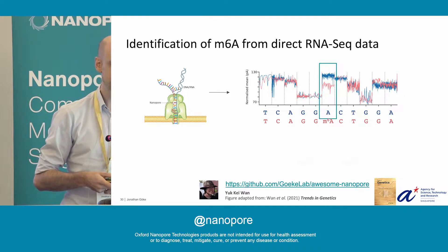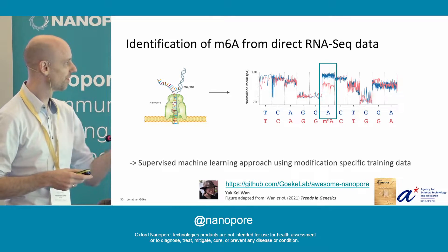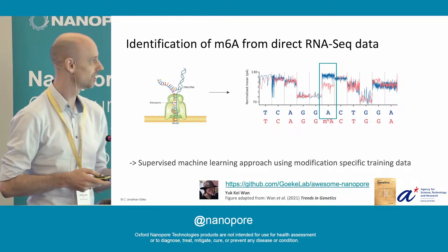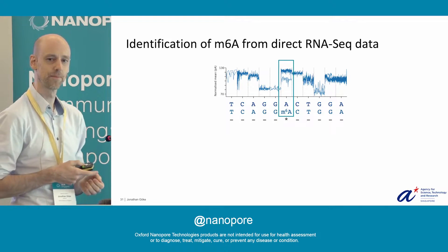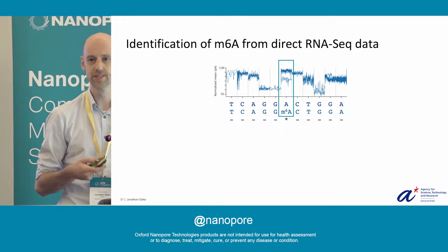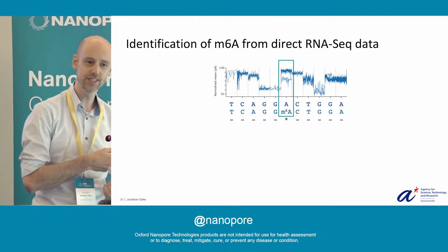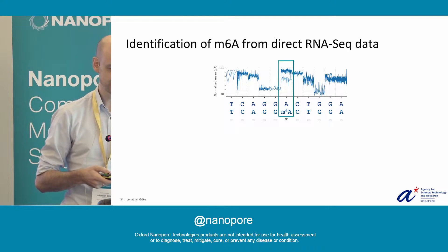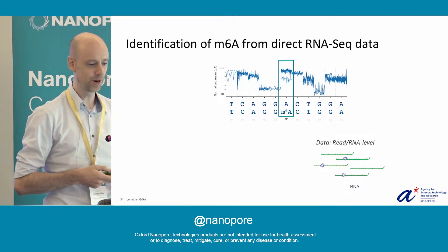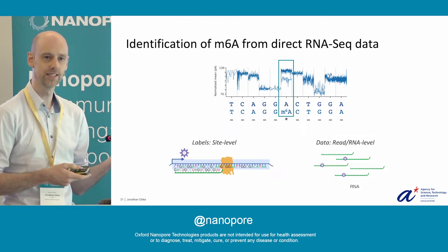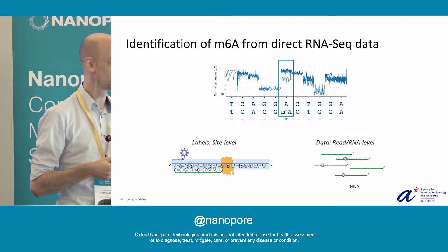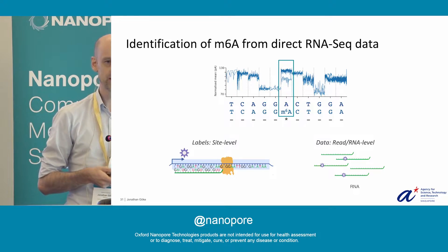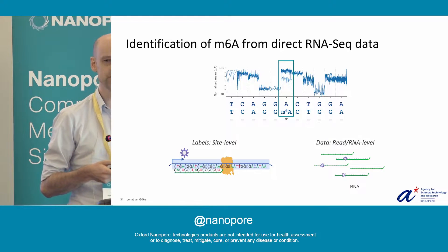We can do that using supervised machine learning methods. However, it's not as easy as having a blue modified read and a red unmodified read. The data is more tricky: we don't know which read is modified and which is unmodified. What we know is that at this position, this gene can generate modified RNAs — we just don't know which ones are unmodified. So we have data for individual reads but are still limited to site-level labels. We know at this gene there's a certain modification, but not which of these reads, which of these RNAs, is modified.